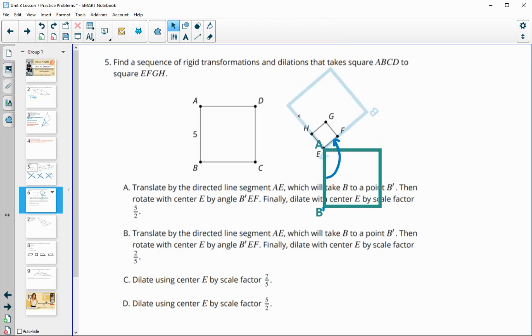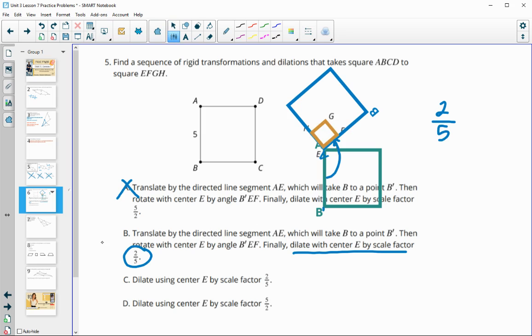Then it says dilate using center E and a scale factor of five-halves. So if we rotate by a scale factor of five-halves, that's going to make this blue square larger, and we actually want it to get smaller, so this one is not going to be good. Now B follows the same instructions up until the final part, where it says dilate with center E and a scale factor of two-fifths. So two-fifths is using the new length and the original length, and so that would shrink us right down onto that square EFGH, so B is good.